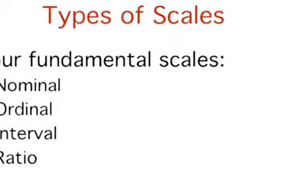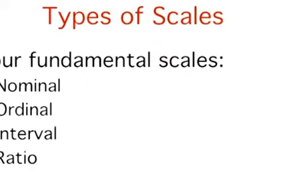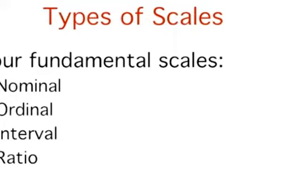Although procedures for measurement differ in many ways, they can be classified using a few fundamental categories. In a given category, all of the procedures share some properties that are important for you to know about. The categories are called scale types, or just scales. There are four basic scales of measurement: nominal, ordinal, interval, and ratio.